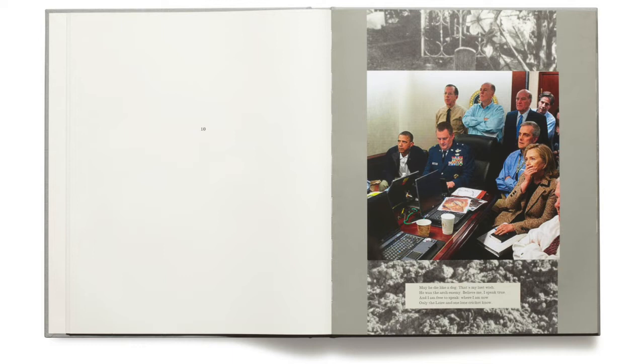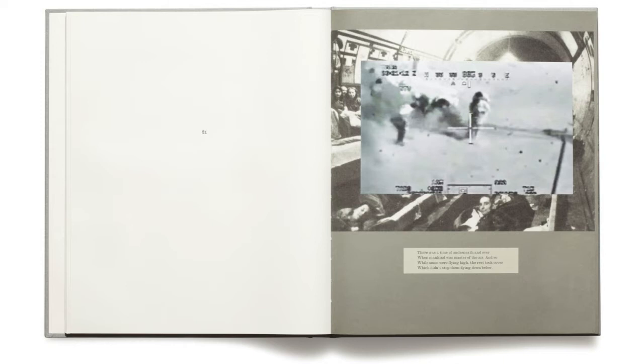This is an example from a recent project by the artists Adam Broomberg and Oliver Shaneran called War Primer 2. It uses images drawn from the web representing the war on terror and juxtaposes these with an earlier publication produced by Bertolt Brecht that similarly tried to establish a critical relationship between photojournalistic representations of conflict and the viewer. Would I be right in saying that the photograph is a particularly instantaneous way of representing war?